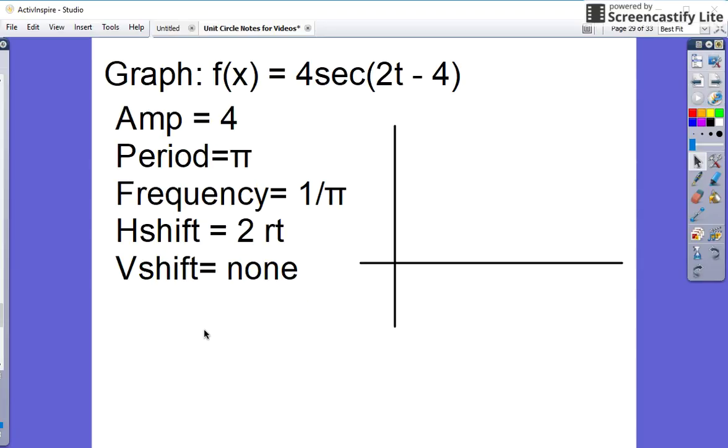We're going to graph f(x) = 4sec(2t - 4). The amplitude there is four. That's from the first value right there. That's a little confusing but I did it on purpose to point something out. The period here is π because it's going to be 2π over 2, my coefficient right there of two. The frequency of course is the reciprocal of period so it makes it 1/π.